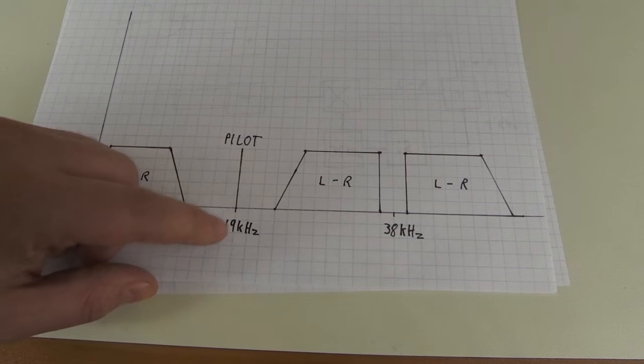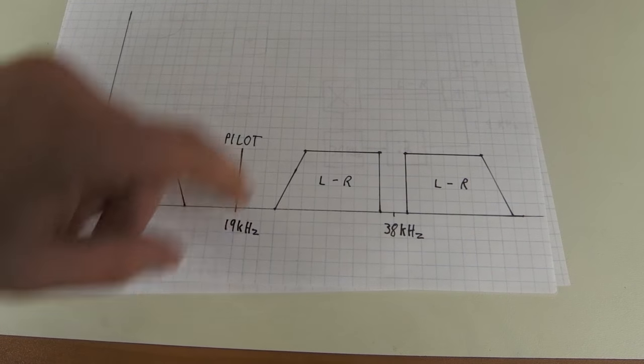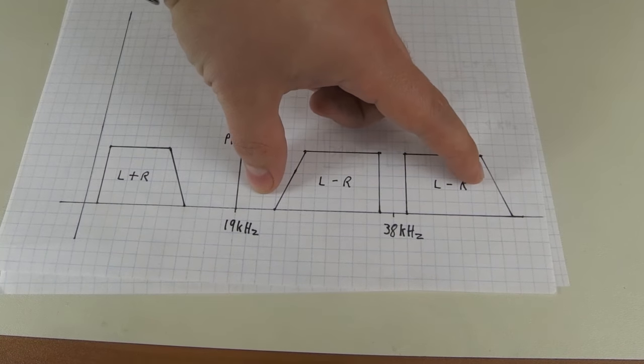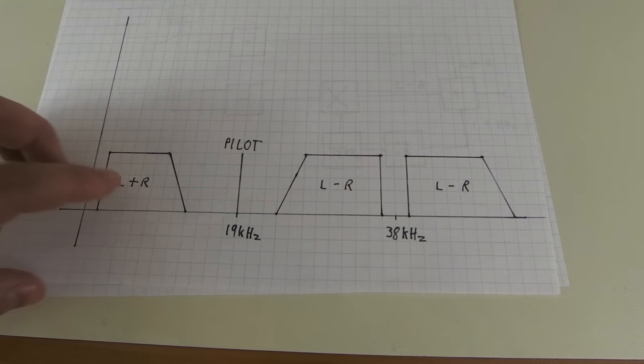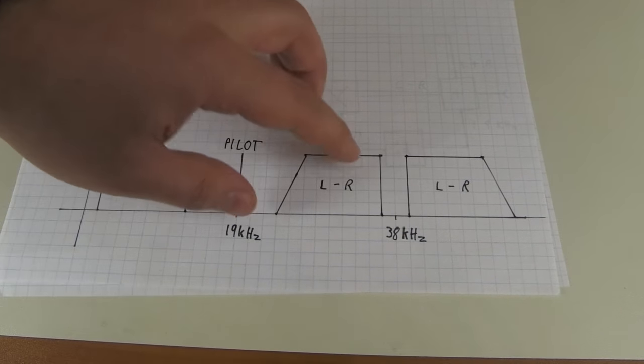So you can use this double 19 kilohertz pilot to decode the left minus right channel. So in total you have a sum and a difference channel.